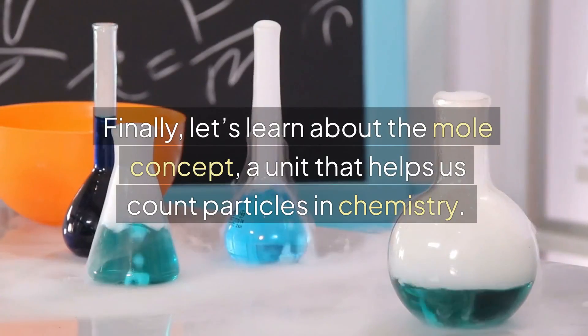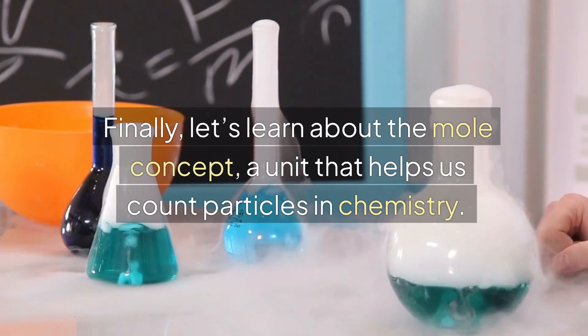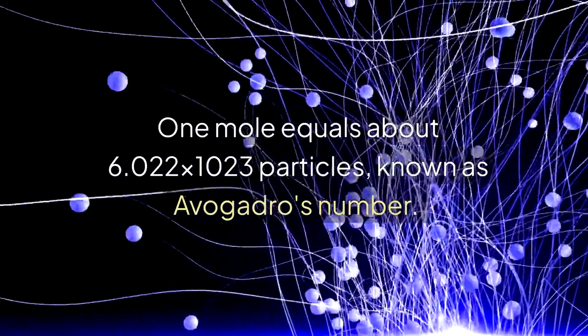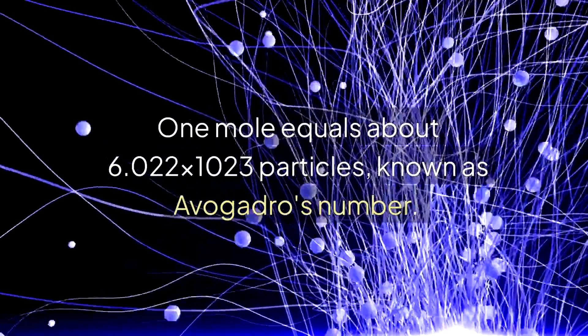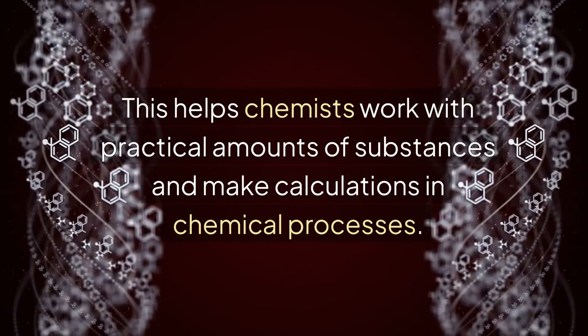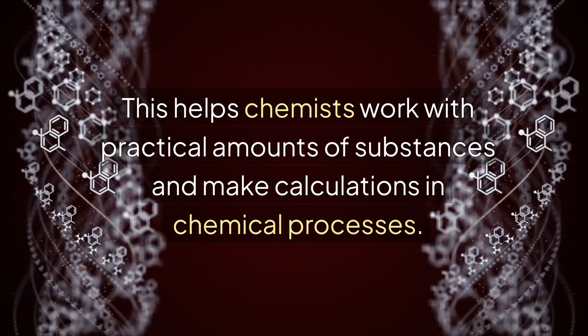Finally, let's learn about the mole concept, a unit that helps us count particles in chemistry. One mole equals about 6.022 into 10 raised to power 23 particles, known as Avogadro's number. This helps chemists work with practical amounts of substances and make calculations in chemical processes.